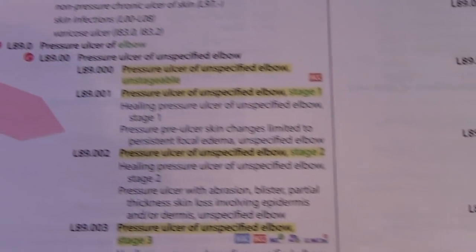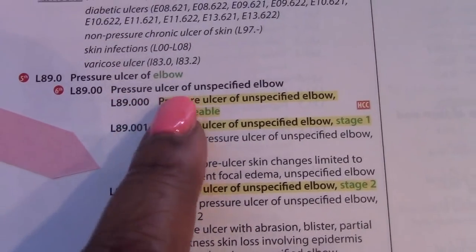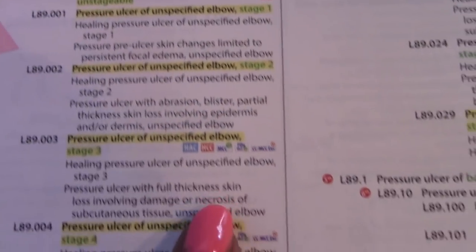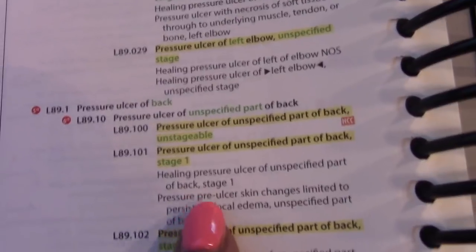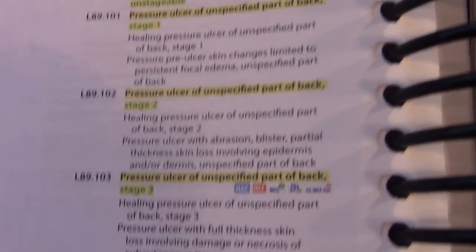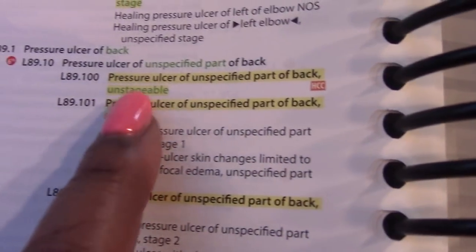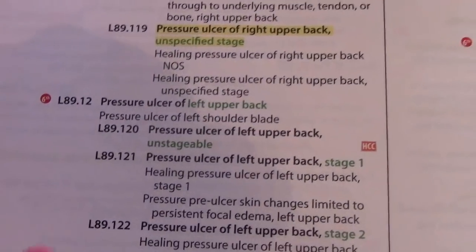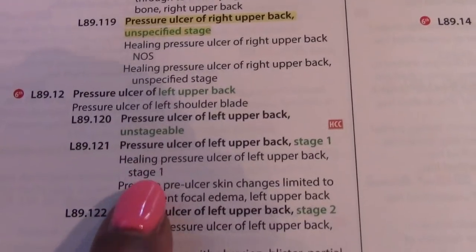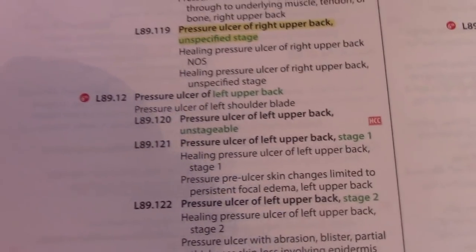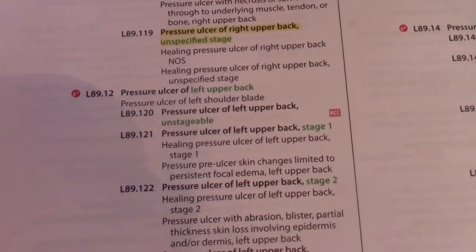The pressure ulcers — notice category L89, pressure ulcers. It talks about stage 1, stage 2, stage 3, and it goes on. As you're coding them across different areas of the body — upper back and others — it tells you unstageable, stage 1, stage 2. As long as you're identifying those stages, these are additional codes you can capture for specificity reasons.